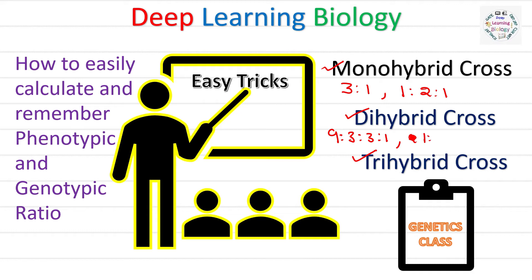...1:2:1:2:4:2:1:2:1. Yes, many of you must not be knowing what is the phenotypic and genotypic ratio for the trihybrid cross. So here we will learn how you can easily calculate the phenotypic and genotypic ratio for dihybrid and trihybrid cross, just by remembering the results of monohybrid cross.